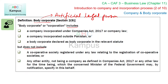Body corporate کو corporation بھی کہہ سکتے ہیں۔ A company incorporated under Companies Act 2017 or company law — تو جو company ہم نے define کی تھی جو companies act کے under registered ہوتی ہے — that is a body corporate، وہ artificial legal person ہے۔ A company incorporated outside Pakistan — اگر کوئی company پاکستان سے باہر registered ہو اور پاکستان میں business کر رہی ہو — تو وہ company کی definition میں نہیں آتی لیکن body corporate کی definition میں آتی ہے یعنی اسے artificial legal person سمجھا جائے گا۔